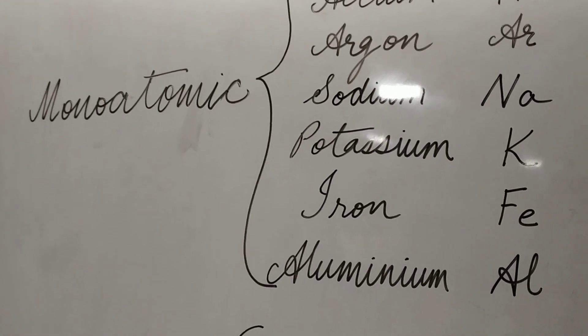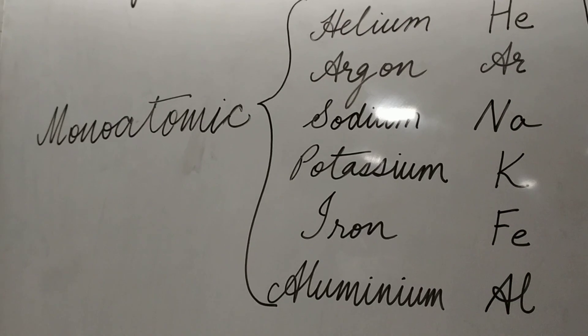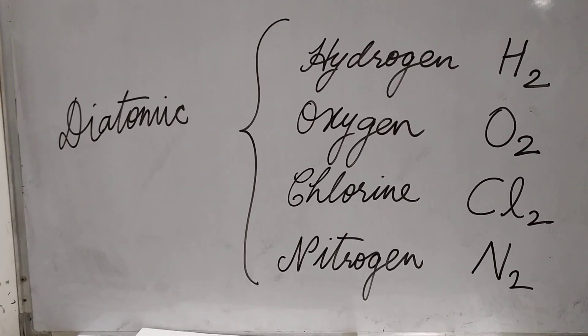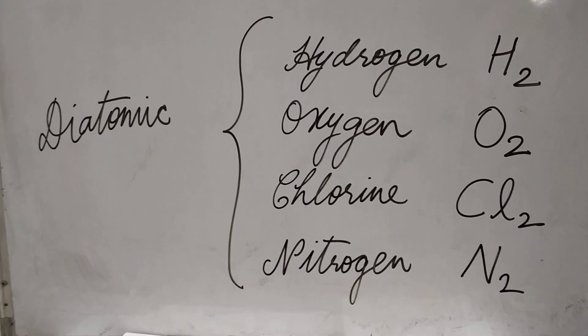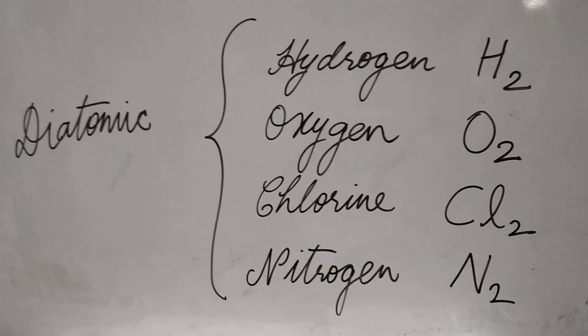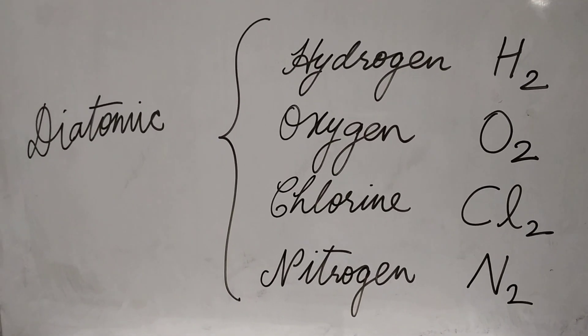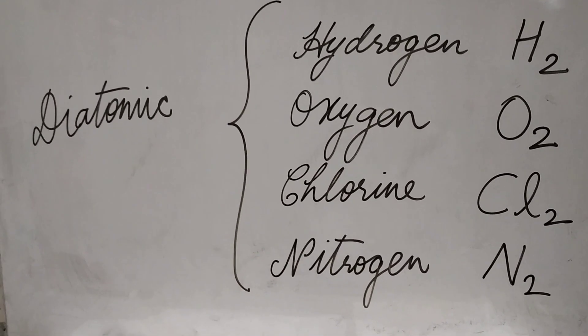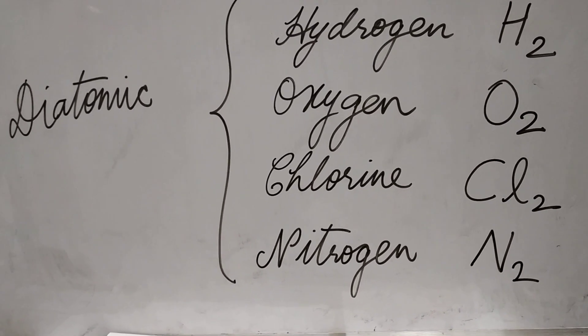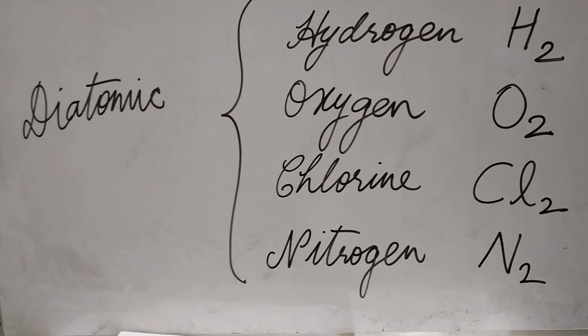Then you have diatomic, wherein you have examples as hydrogen, where you have H2, two atoms of hydrogen coming together to form a molecule of hydrogen. O2, two atoms of oxygen coming together to make a molecule of oxygen. Chlorine, Cl2 likewise and nitrogen, N2 likewise.